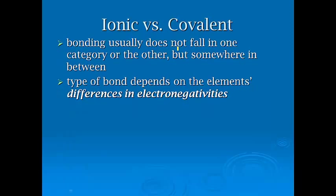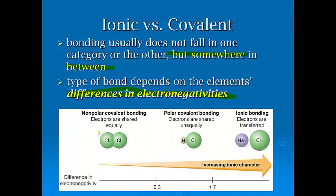We're kind of lying to you in separating these categories. They really fall somewhere in between, but we can group them based on electronegativities because it makes it easier. The type of bond depends on the element's differences in electronegativities. If the difference in electronegativity, we have 0.3 and 1.7 here as these cutoffs.